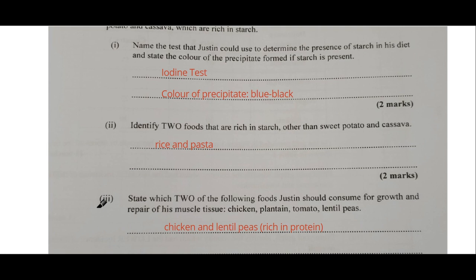Part 3: state which two of the following foods Justin should consume for growth and repair of his muscle tissue — chicken, plantain, tomato, lentil peas. You're looking for foods rich in protein, because protein is needed for growth and repair. Chicken and lentil peas are the two options. Chicken is an animal food generally rich in protein, and lentil peas are legumes, which are normally rich in protein — good for vegetarians and vegans who don't eat animal foods.